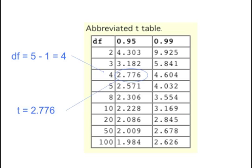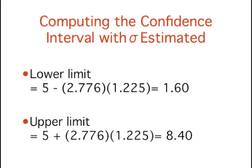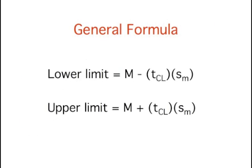The next step is to find the value of t. The degrees of freedom equals n minus 1, which in this example is 4. As you can see from the table, the value for the 95% interval for 4 degrees of freedom is 2.776. The confidence interval is then computed in much the same way as when we know the standard error of the mean. The only differences are that the estimated standard error of the mean and t are used rather than the actual standard error of the mean and z. The lower limit equals 1.60 and the upper limit equals 8.40. The general formula for the confidence interval for the mean uses m as the sample mean, t sub cl as the t for the confidence level desired, and s sub m as the estimated standard error of the mean.